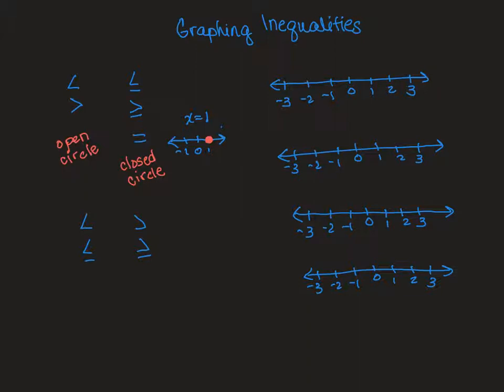The second part of graphing an inequality involves arrows. On the left, we have less than or less than or equal to — notice that the symbol is pointing in this direction, and that is the way the arrow would go. Greater than or greater than or equal to, the arrow would go to the right. Let's look at these number lines and do a couple of them.